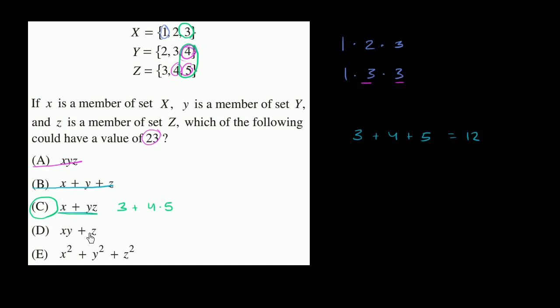x times y plus z. So if you wanted to get as large as possible, you'd do 3 times 4. So you could try 3 times 4 and then plus some z. But then in this case, this is going to be 12 plus z. z would have to be 9. You'd have to find a 9 in this third set, and there's clearly no 9, so you could rule that one out as well.